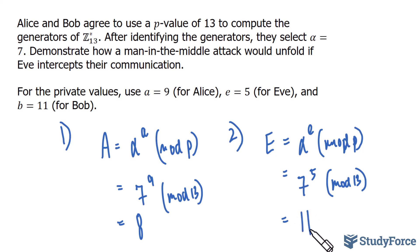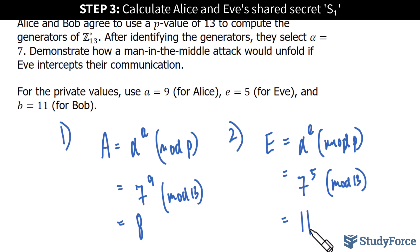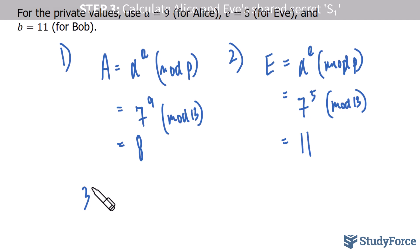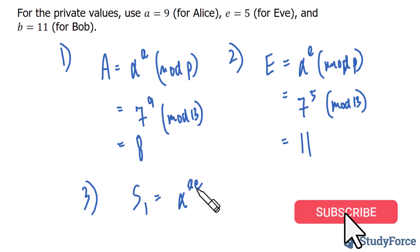In step number three, both Alice and Eve compute the shared secret. But Alice thinks she shares this secret with Bob. To compute the shared secret, we'll call it S sub 1, since it will be different than the shared secret that Eve will share with Bob in a later step. So what we do to calculate the shared secret is we take the value of alpha, raise it to the power of a times e, mod p.